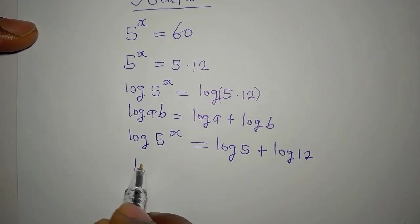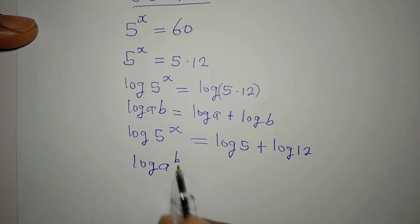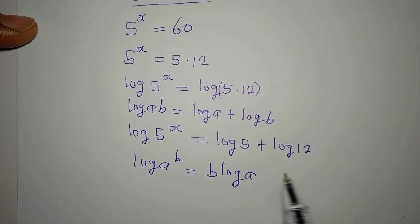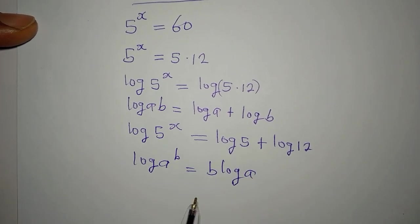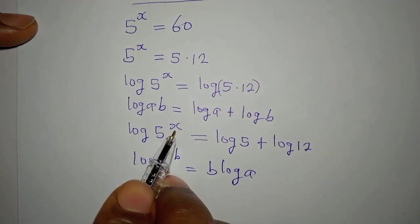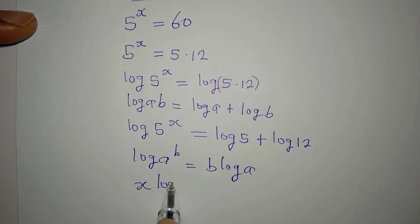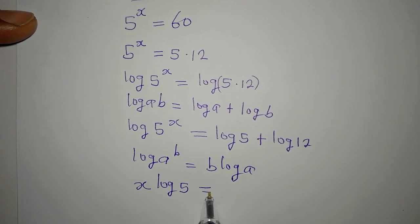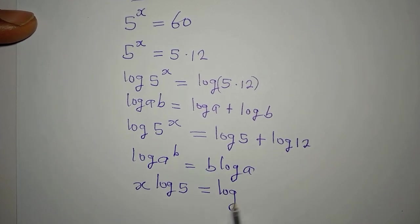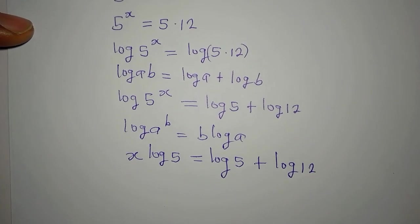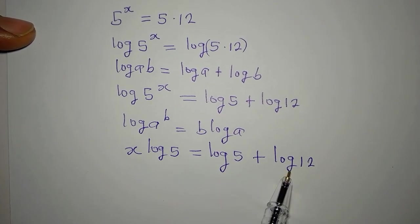Now, if you have log a to the power of b, it is the same thing as b times log a — the power always comes down to multiply the log. So here, x is going to come down and we have x log 5, and this will be equal to log 5 plus log 12.